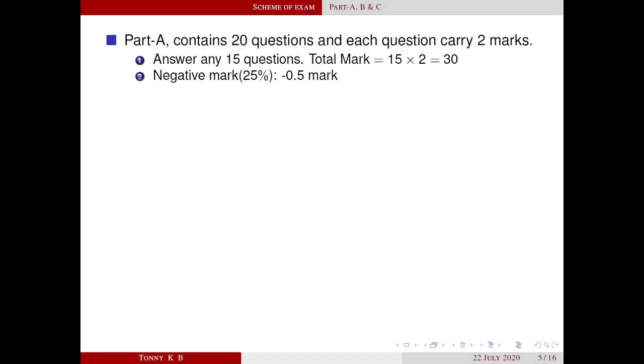Part A contains 20 questions and each question carries two marks. In this part you have to answer maximum 15 questions. So total marks allotted to this part is 30. Negative mark for this part is 25% which is minus 0.5 marks.